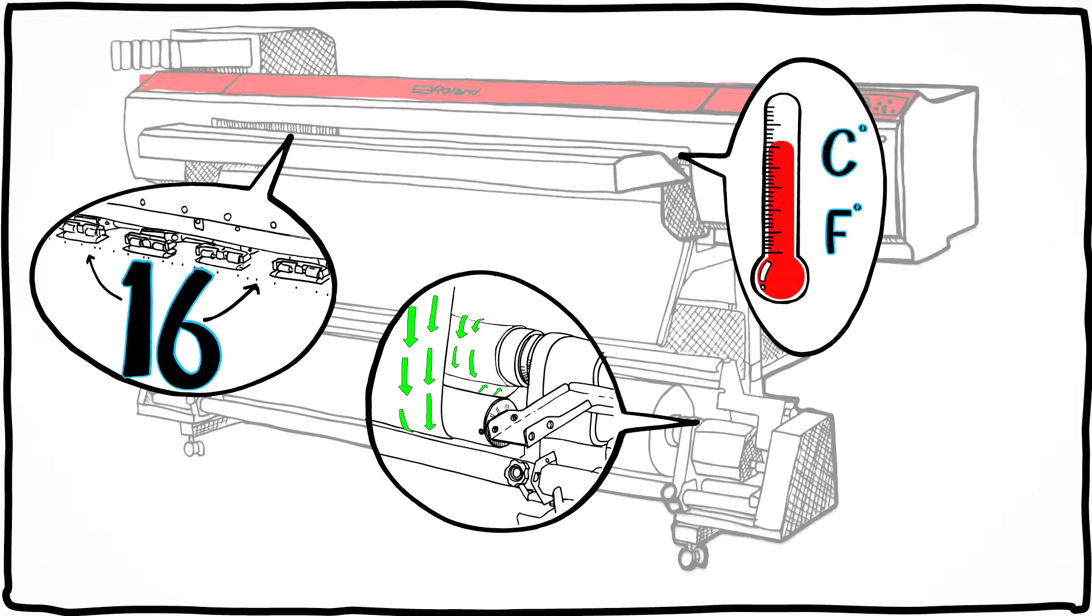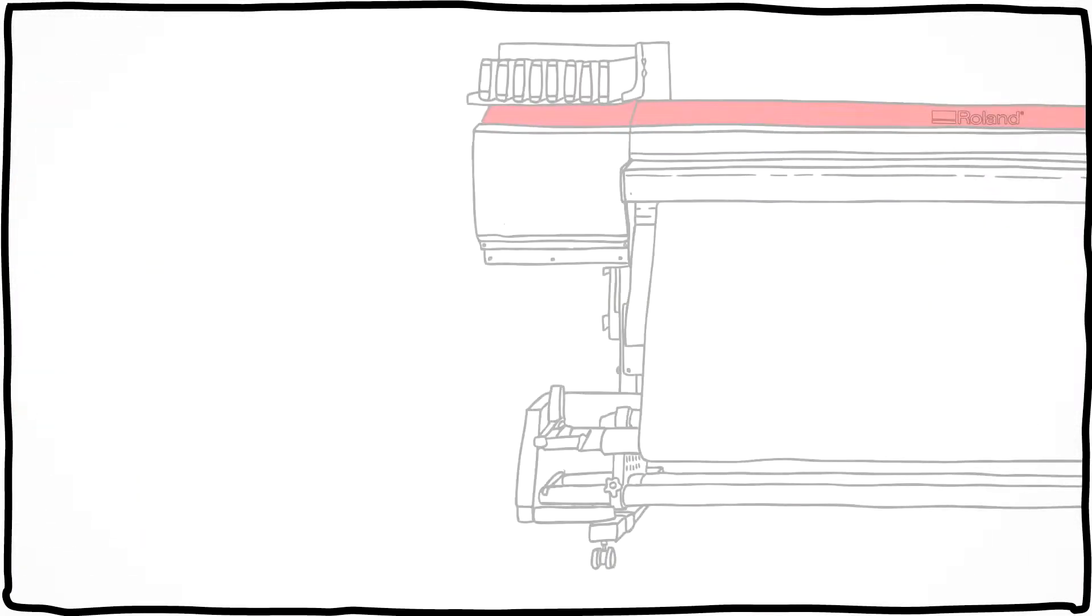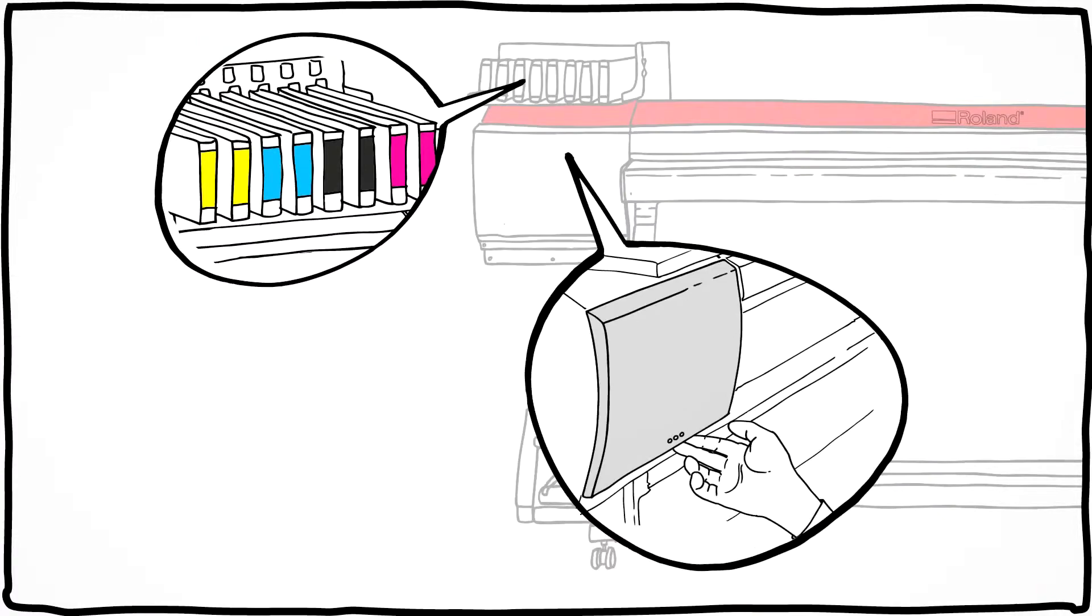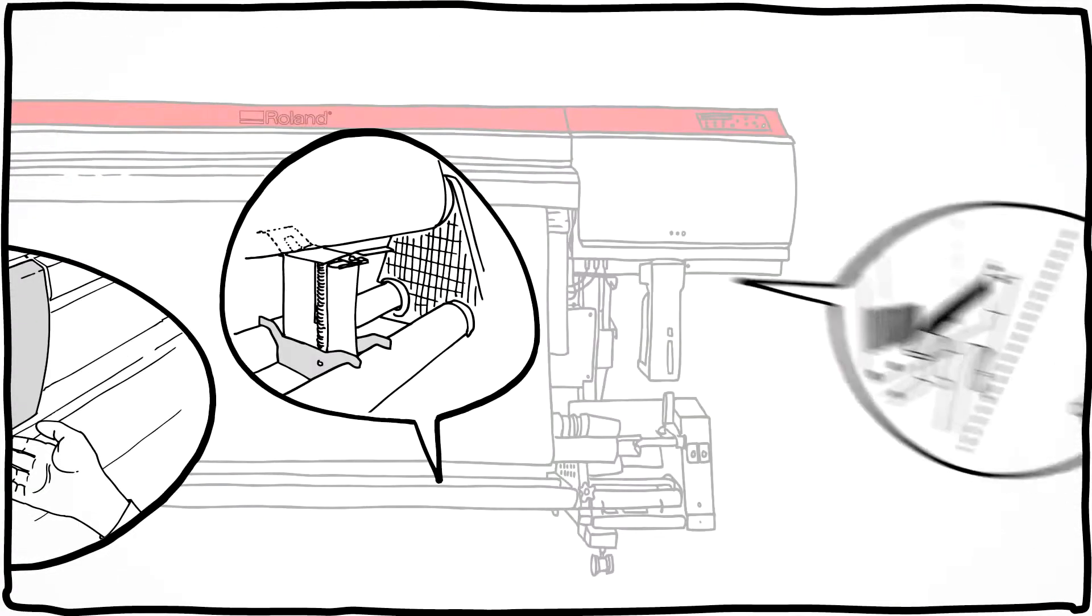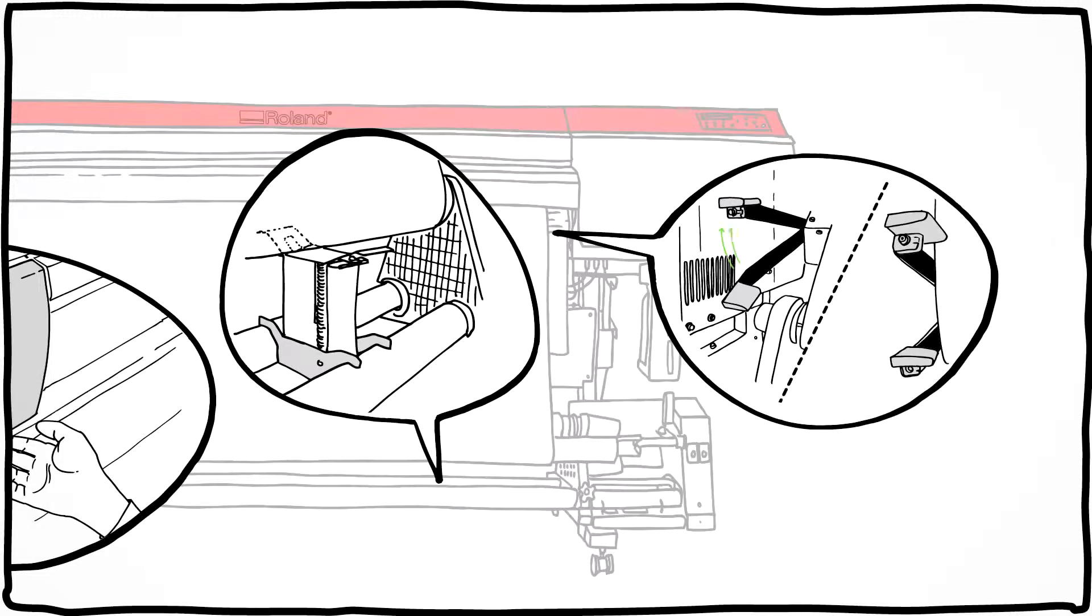When it comes to ease of use, the XF was built for productivity. Front-loading cartridges, a one-touch open and close cover for easy cleaning, levers in front and back to load your media. And if the media is heavy, media brackets make it easier to lift.